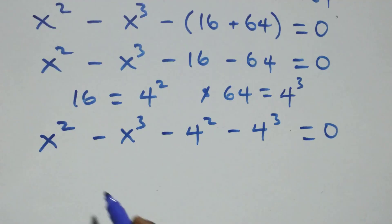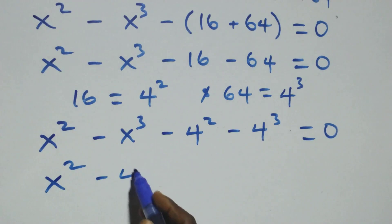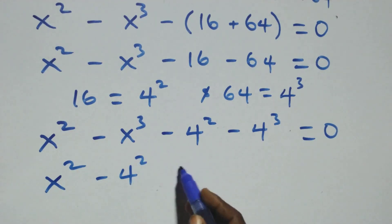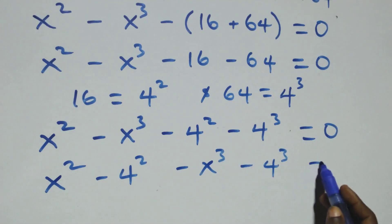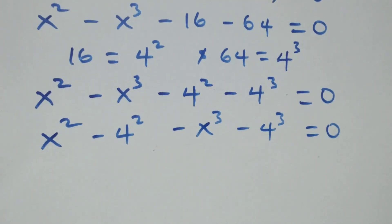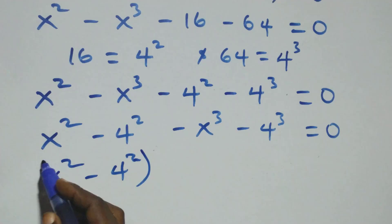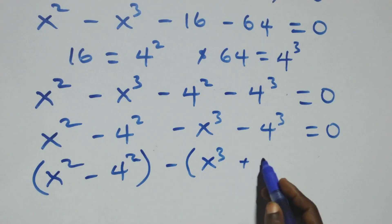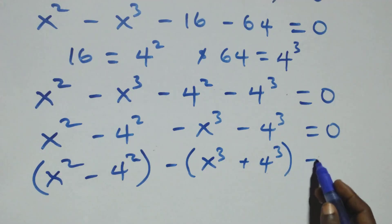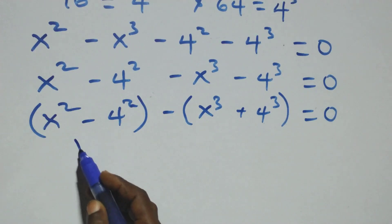We rearrange and bring the squares together and the cubes together. We have x squared minus 4 squared, then x cubed minus 4 cubed, equals zero. When we group these in brackets, we put this as bracket x squared minus 4 squared, and minus is a common factor, leaving us with bracket x cubed plus 4 cubed, equals zero.